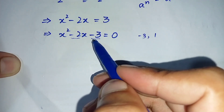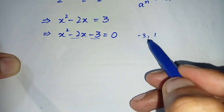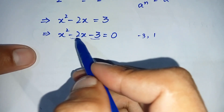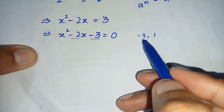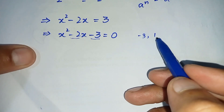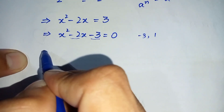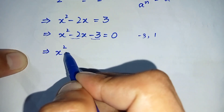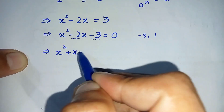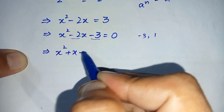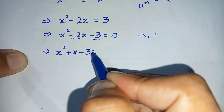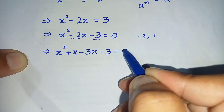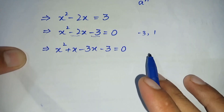Those numbers are minus 3 and plus 1. Multiplying these two gives minus 3, and adding them gives minus 2. So we substitute minus 2x with minus 3x plus x. It will become: x squared plus x minus 3x minus 3 is equal to 0.